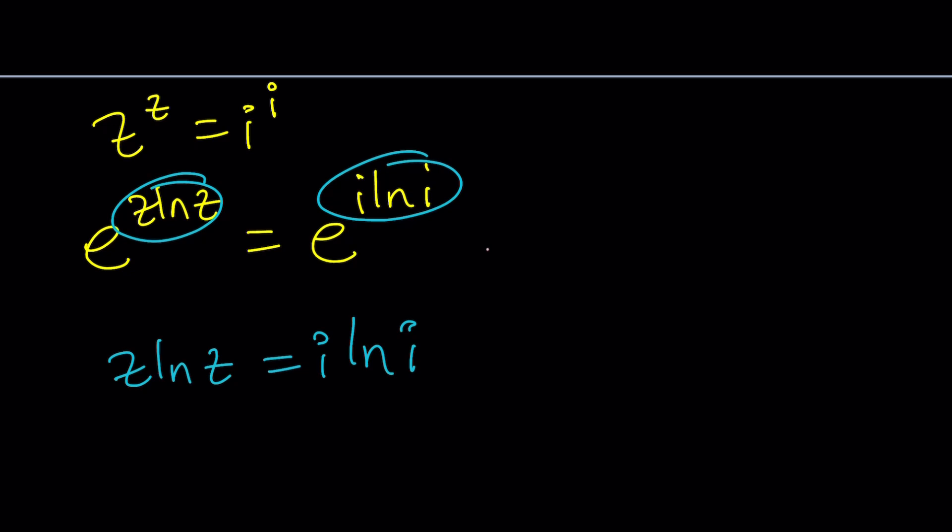But another thing that we need to worry about is that we can multiply right-hand side, and for the same reason left-hand side, but I want to do the right-hand side because that's a constant. By e to the power 2 pi n i. Why? Because this is 1 in the complex world. So I can always multiply anything by 1 without changing the value, but it's actually going to change solutions.